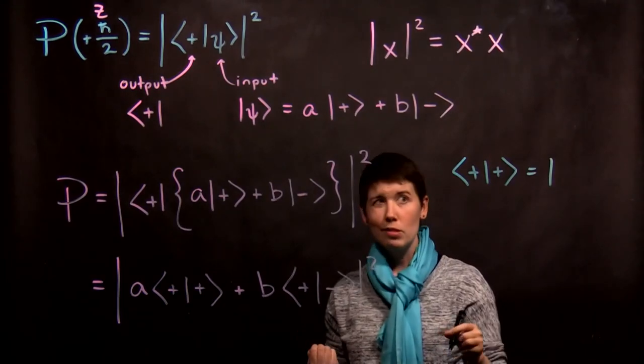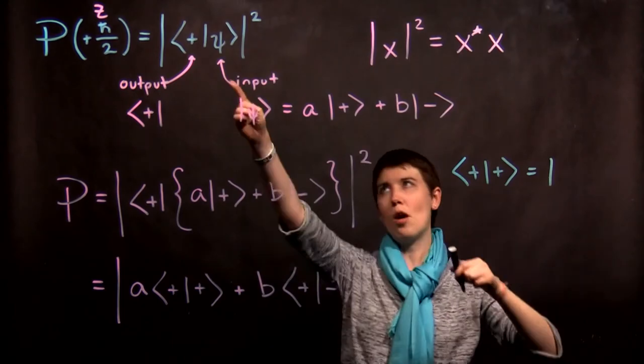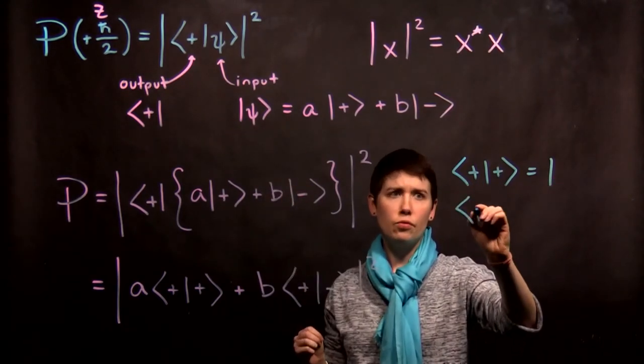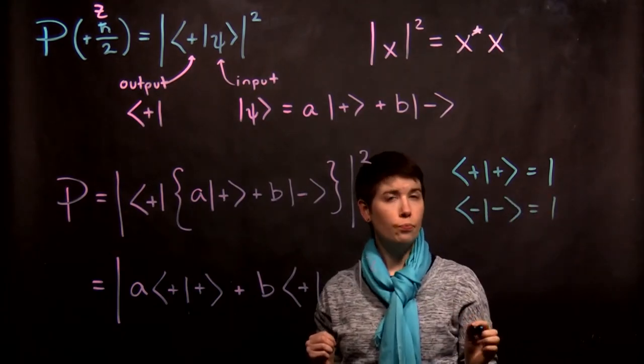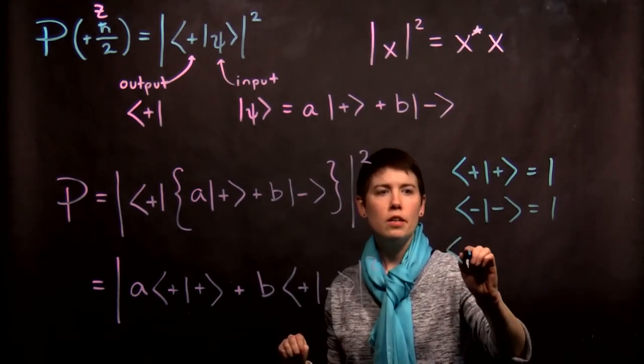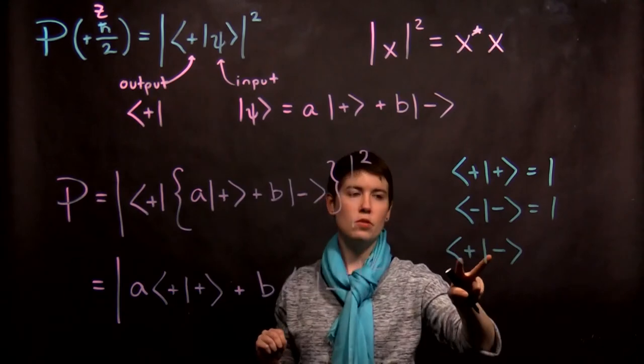And another way to think about this is that if you start with spin up, you measure spin up. Right? That our probability if your input is the same as your output is one. If you have down with down, that also equals one. So this is very helpful.